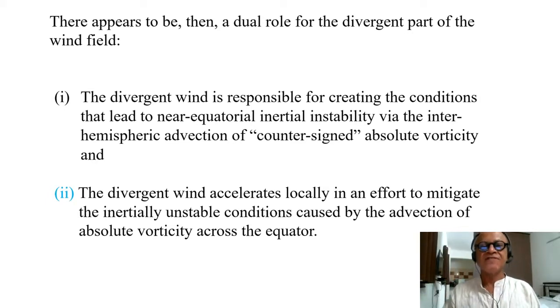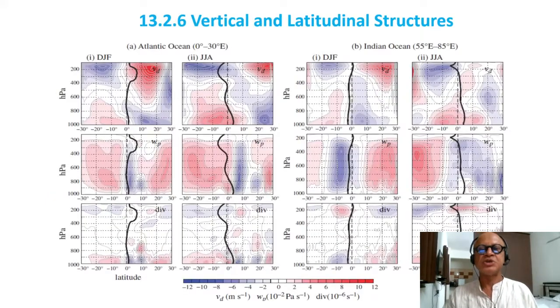The divergent wind is responsible for creating the conditions that lead to near-equatorial inertial instability via the interhemispheric advection of counter-signed absolute vorticity. This is a critical role related to the cross-equatorial pressure gradient. The divergent wind also accelerates locally in an effort to mitigate inertially unstable conditions caused by the advection of the absolute vorticity across the equator. So it is forced to cross the equator with this divergent flow up to the zero absolute vorticity line, and then there is convergence. But as it is advecting the vorticity and creating these inertially unstable conditions, it's also trying to mitigate them.